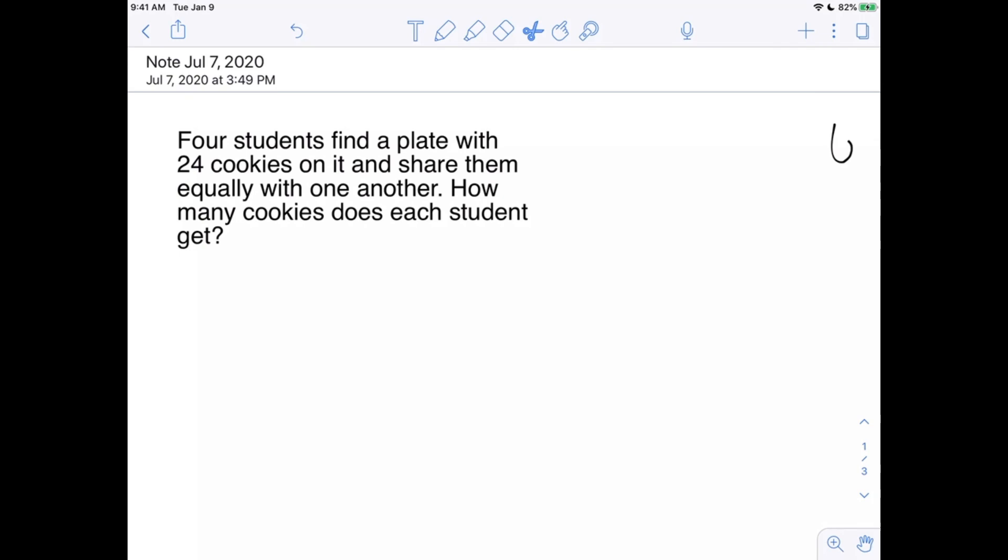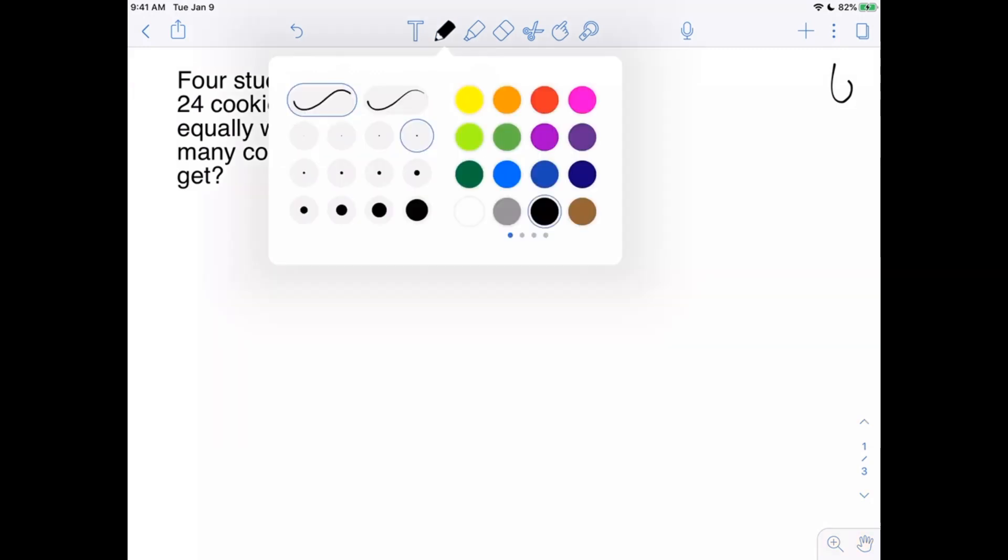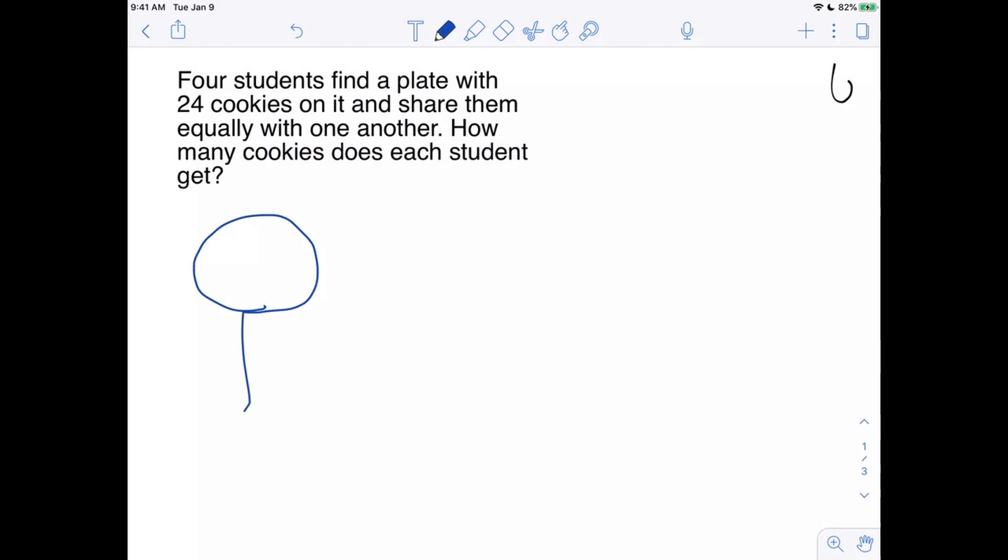So it says four students find a plate with 24 cookies on it, and they share them equally with one another. How many cookies does each student get? All right, so let's model this. And I'm going to do something a little silly, I guess. Here's one person. And then here's another person. And then here's another person. And I'm drawing really big heads on purpose. Because now we've got those 24 cookies, and we need to hand those out. This is called partitive because we know that we have four students. And so we know how many parts we're going to take those cookies and cut them into four equal piles. So this is why it's called partitive. And we know it's going to be four piles because we have four students. So let's take those 24 cookies, and let's hand them out.